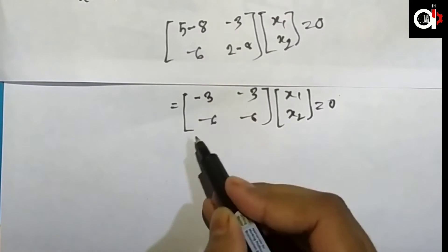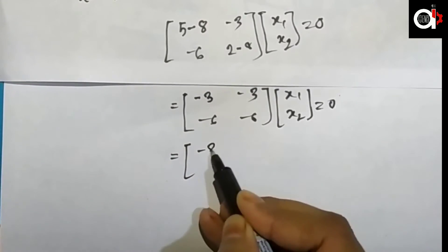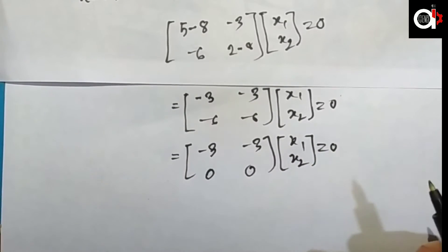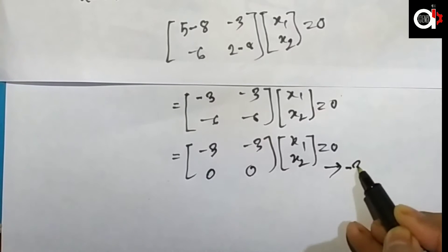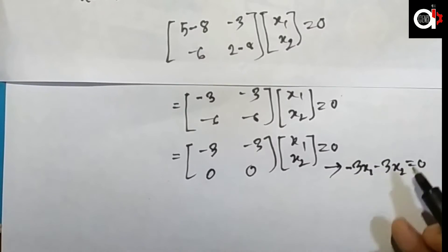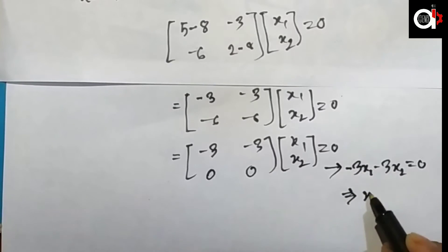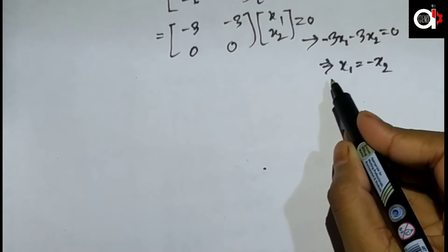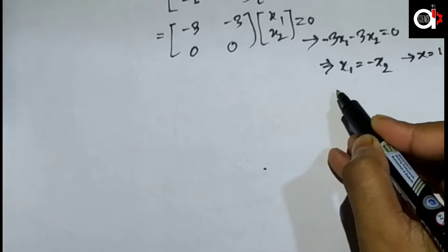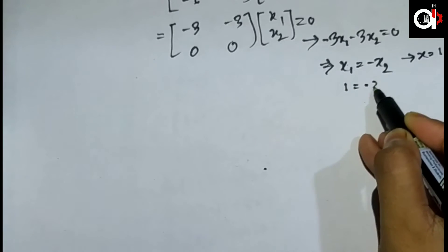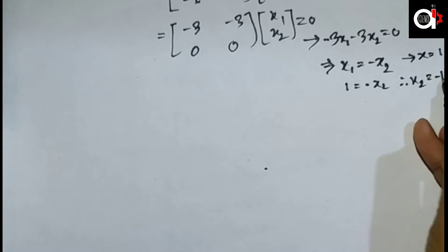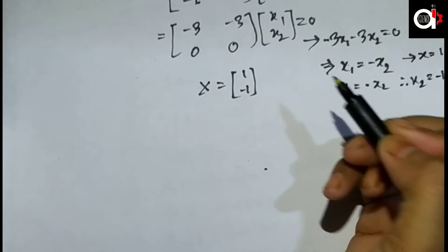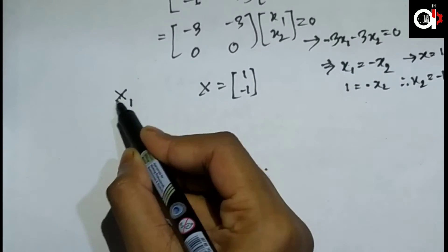Simplifying the second eigenvalue equation: x₁ = −x₂. Setting x₂ = 1 as a free variable, x₁ = −1. So the eigenvector for λ = 8 is [1, −1]. Our first eigenvector was [1, 2] and the second is [1, −1].